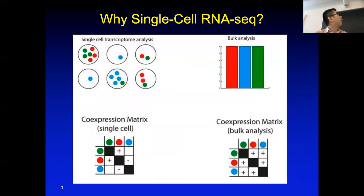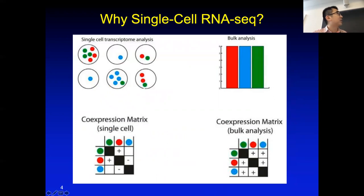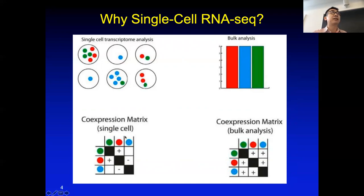Another drawback of typical bulk RNA-seq data is that it can give you misleading correlations between genes. Assume we have three genes colored red, blue, and green in these single cells. If you perform bulk RNA-seq, which averages all the cells, you can see that these three genes appear to have the same expression level, so across different tissues you might think their expressions are positively correlated. But with single-cell RNA-seq, you can see that the blue gene is never coexisting with the red and green genes — so its expression correlation is actually negative rather than positive.